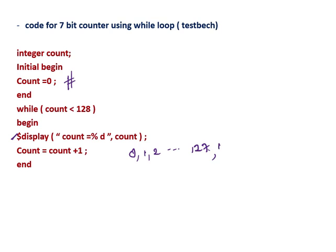Then next is 128, then 129, then 130 — then what will happen? It will continuously check this condition: if count less than 128, then there won't be an increment for count. So it will count 2 to the power 7, means 128 values, means 0 to 127. It will count up to 127.